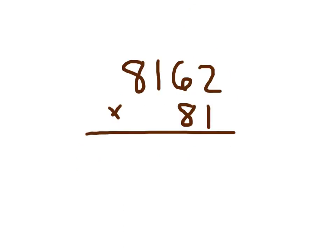Let's work on this problem: 8,162 times 81. We'll start with the 1. 1 times 2 is 2, 1 times 6 is 6, 1 times 1 is 1, and 1 times 8 is 8. This makes sense as 8,162 times 1 is 8,162.